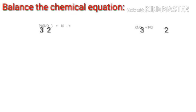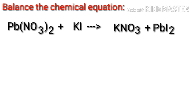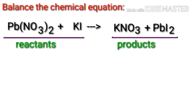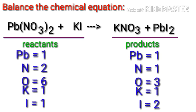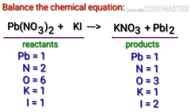Let's balance the chemical equation. In this equation, the reactants are lead nitrate and potassium iodide, and the products are potassium nitrate and lead iodide.